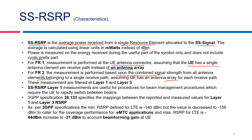These measurements are done and filtered at two layers as discussed previously — at layer 1 and layer 3. The SS-RSRP at layer 1 measurements are useful for procedures like beam management, which requires the UE to rapidly switch between beams.